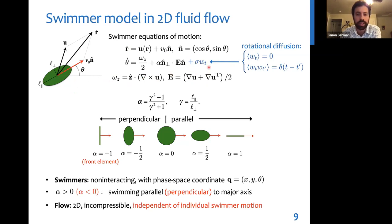And at times, we will also consider the effect of a random term added to the angular dynamics to simulate rotational diffusion. There's one additional parameter alpha, which characterizes the shape of the particle. So alpha equals zero corresponds to circular shape. And as alpha in absolute value goes towards one, the particle shape becomes more elongated. And negative values of alpha correspond to a swimming direction perpendicular to the major axis of the ellipsoid. And positive values correspond to swimming parallel to the major axis of the ellipse.